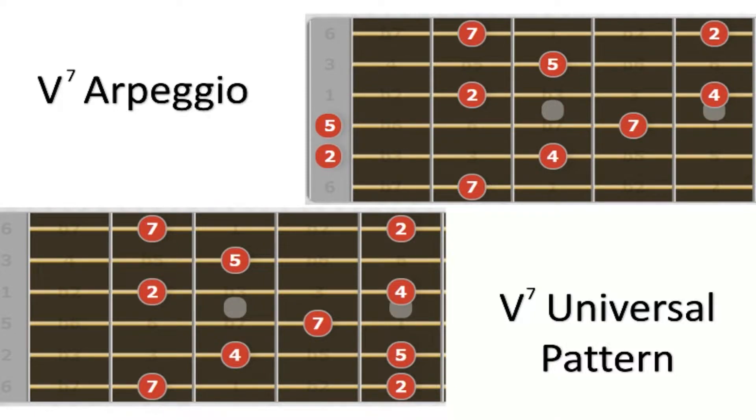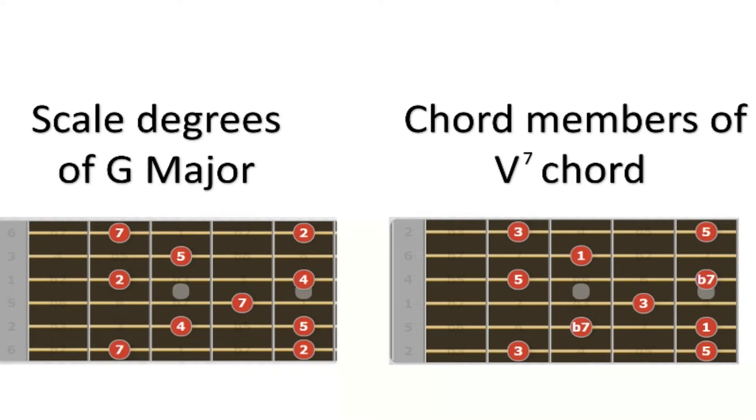To look at some of the theory of the V7 chord, I am now converting the scale degrees of G major to the chord members of the V7 chord. This means that the numbers on the right represent the notes that make up the V7 chord: the root, the 3rd, the 5th, and the flat 7th.